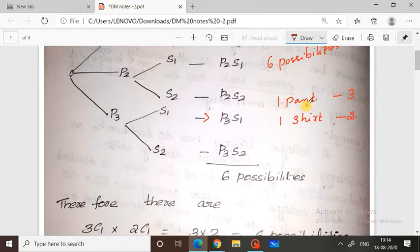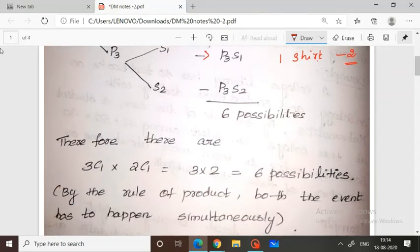Out of the three pants, we have to select one, and out of the two shirts, we have to select one. Therefore, three times two equals six possibilities. This means we are using the rule of product.